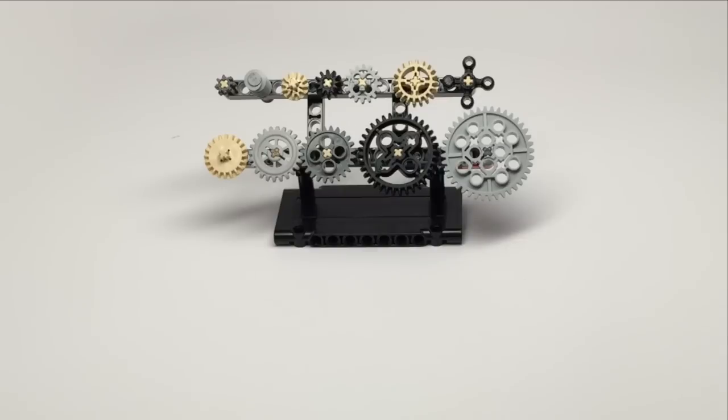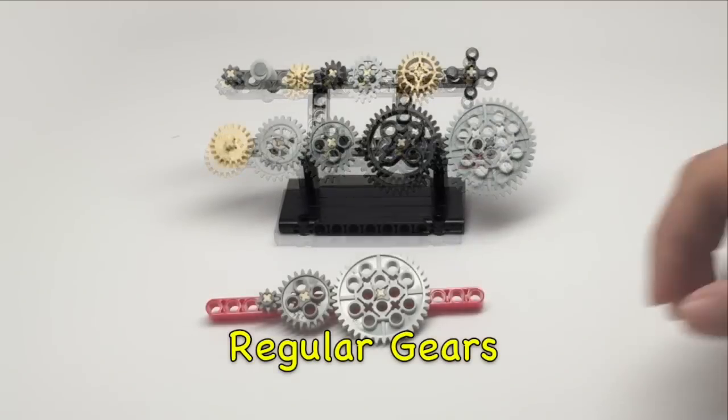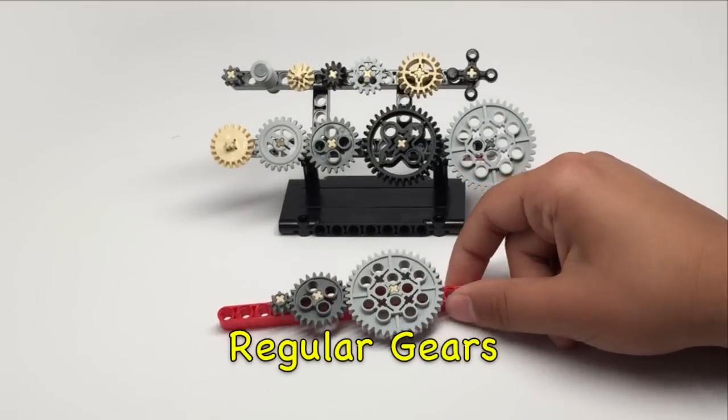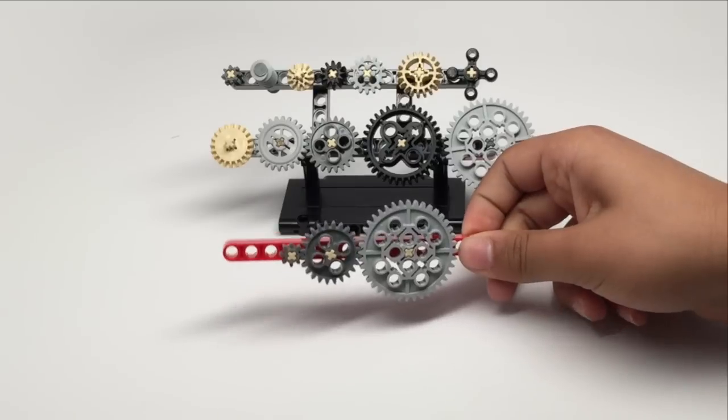Gears transfer motion by meshing together and spinning. Shown here are most of the gears you'll be using. These are the basic types of gears meshed together and placed on a beam.